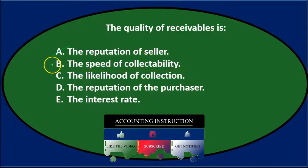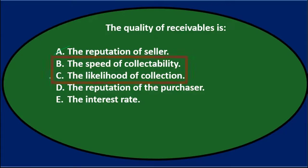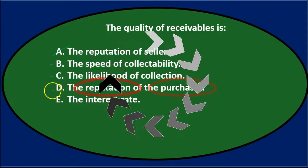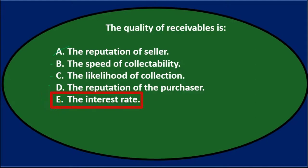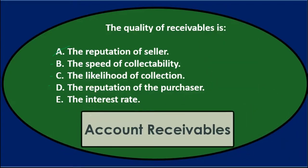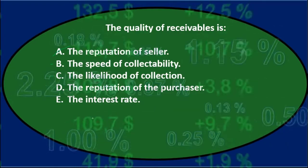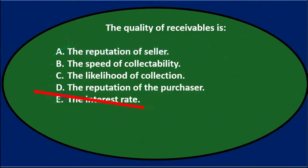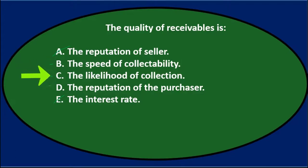B, the speed of collectability — that could be a factor in quality, so we'll keep that. C, the likelihood of collectability — that also seems like a pretty good factor in determining how valuable the receivables are. D, the reputation of the purchaser — if we're looking at reputation we would be considering the purchaser, the other side of the transaction. E, the interest rate — that's not really what we're talking about in terms of quality, and some receivables like accounts receivable won't even have an interest rate.